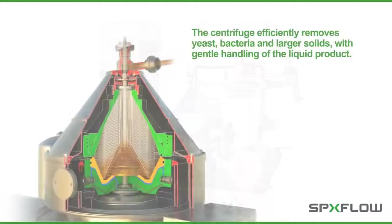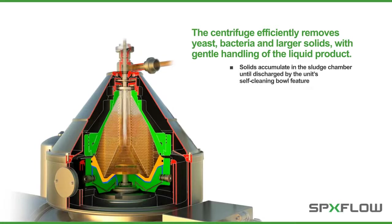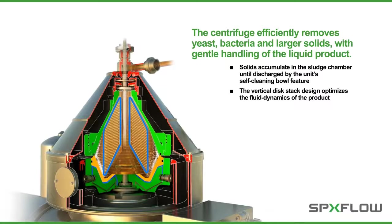The centrifuge efficiently removes yeast, bacteria, and larger solids with gentle handling of the liquid product. Solids accumulate in the sludge chamber until discharged by the unit's self-cleaning bowl feature. The vertical disc stack design optimizes the fluid dynamics of the product.